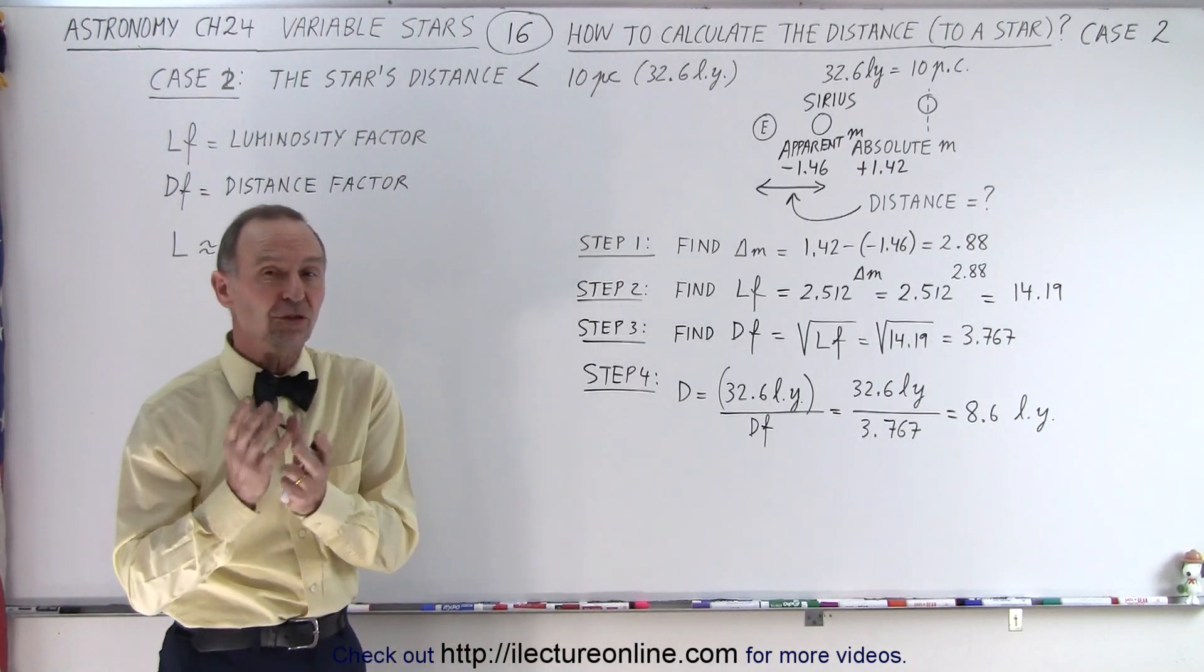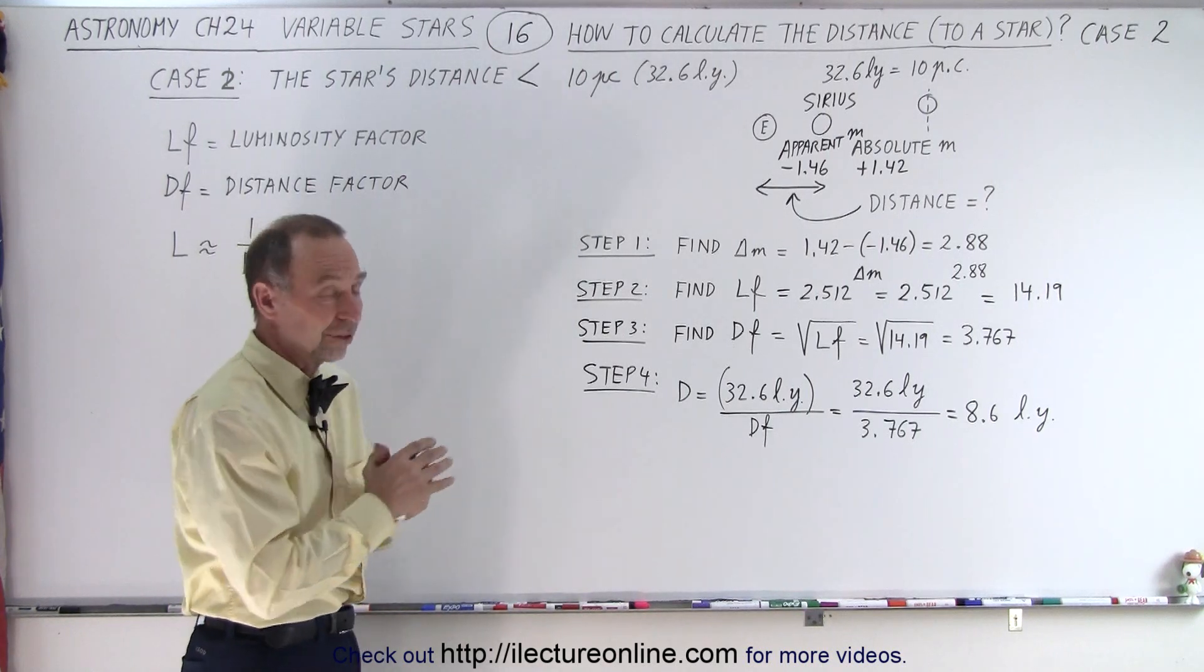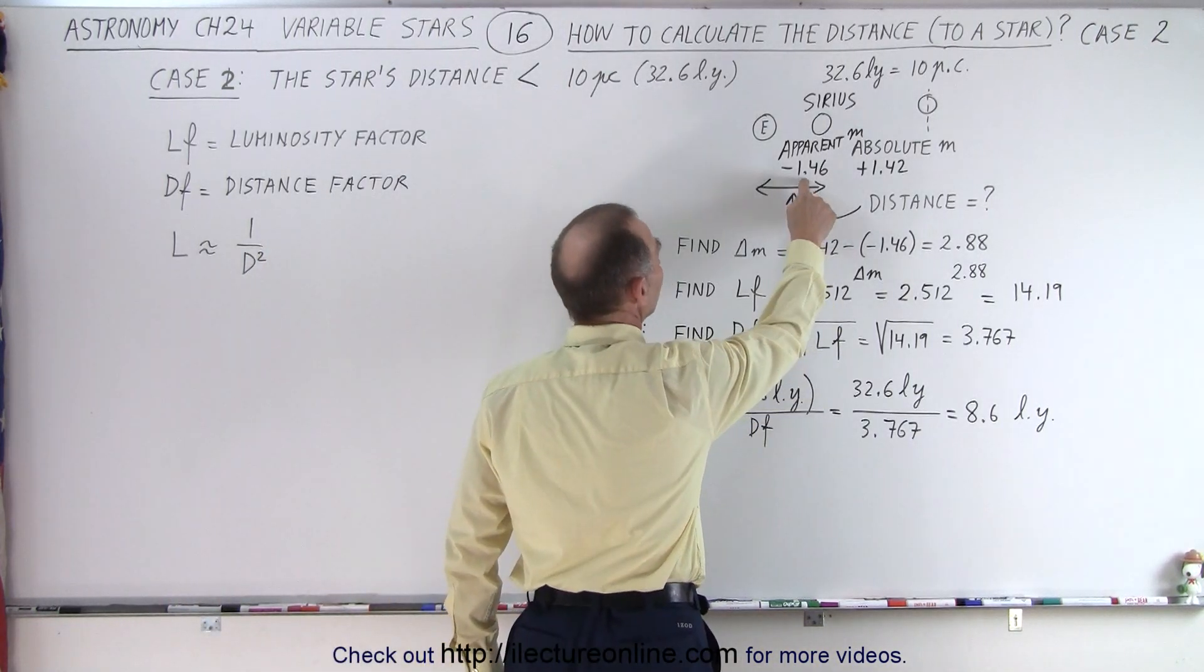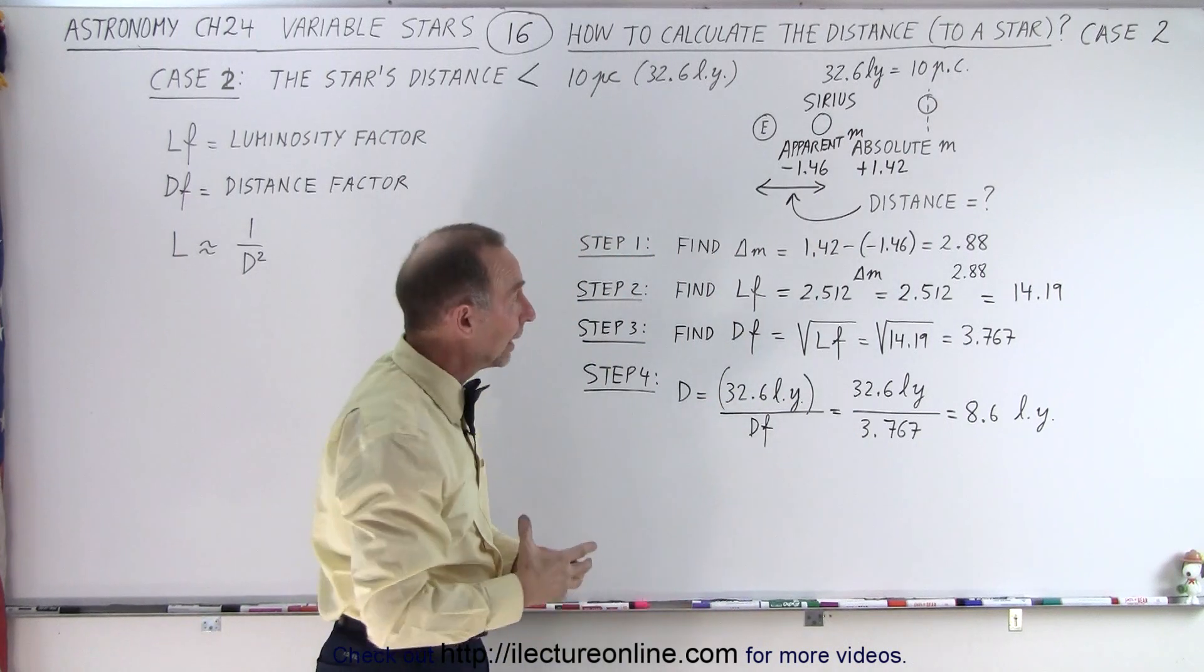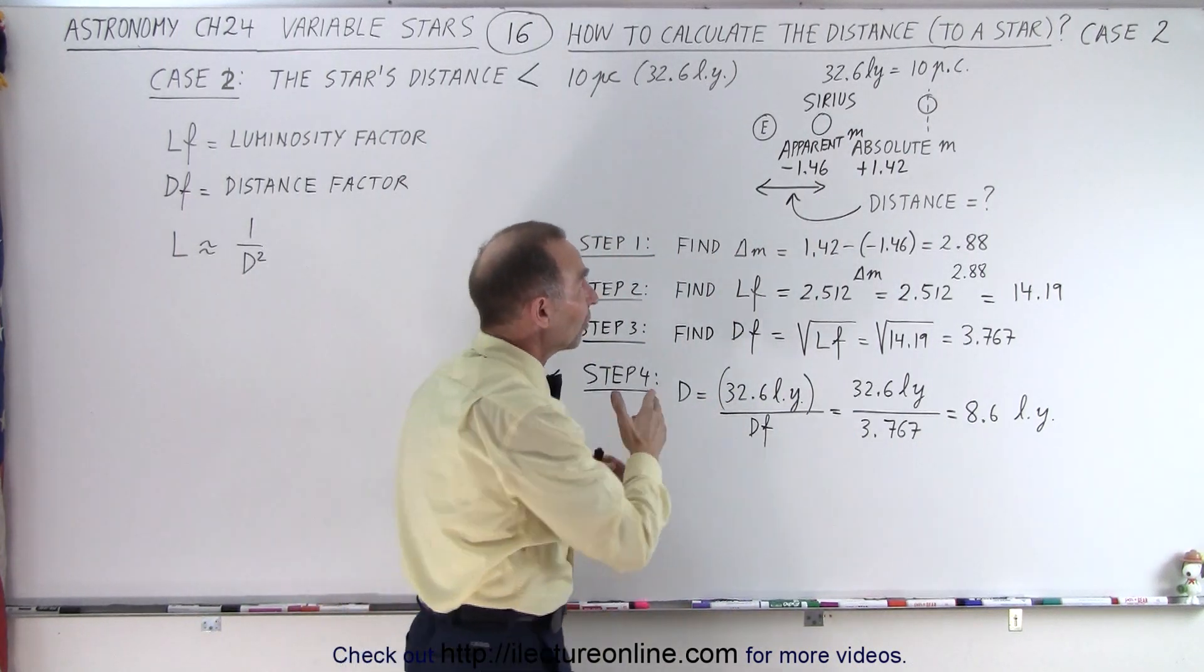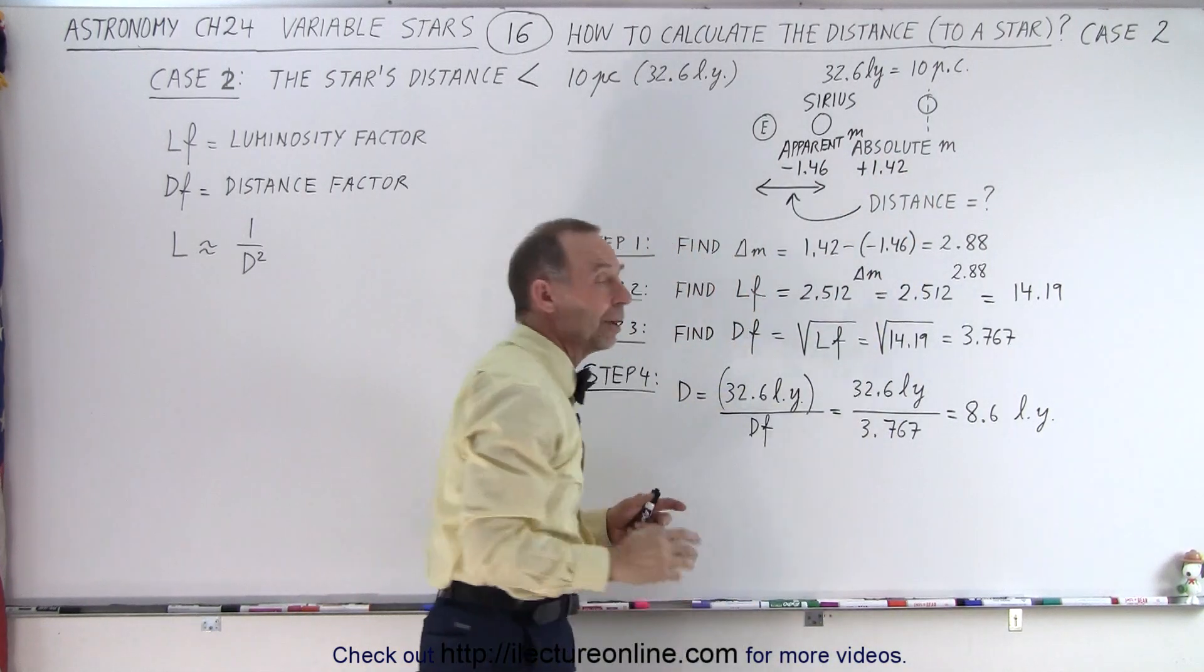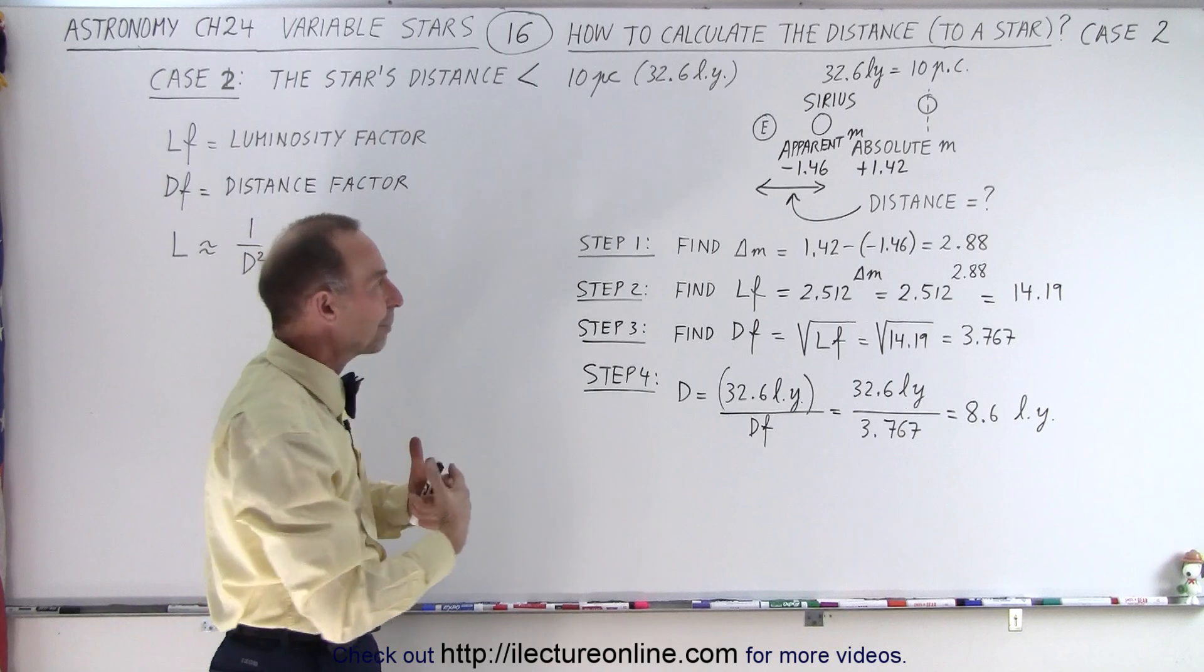Case 2 is where the star actually is closer than the standard distance of 32.6 light years or 10 parsecs. So Sirius has an apparent magnitude of minus 1.46, it's the brightest star in the sky, but if we were to place it at a distance of 10 parsecs away, 32.6 light years, it would appear to have a magnitude of 1.42, which is then of course considered the absolute magnitude.